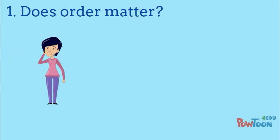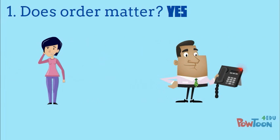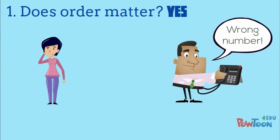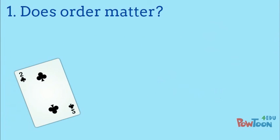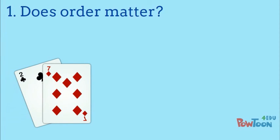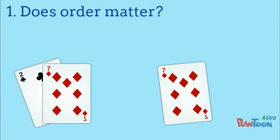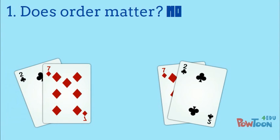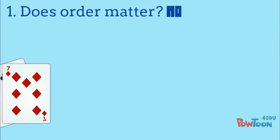If you rearrange the last four digits of your friend's cell number, would that matter? Yes. So we're dealing with a permutation because order matters. Is a hand with a two of clubs and seven of diamonds different from a hand with a seven of diamonds and two of clubs? No. So we're dealing with a combination because the order doesn't matter. And you should fold.